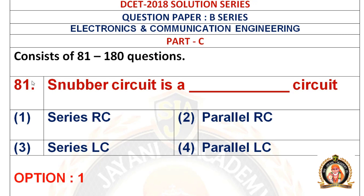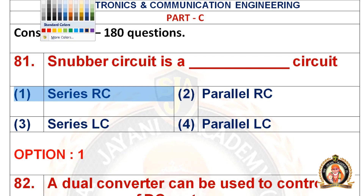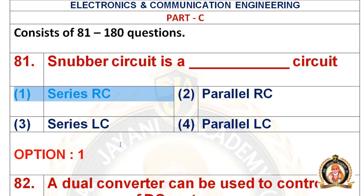The first question is the 81st question: the snubber circuit is a dash circuit. The first option is Series RC, the second is Parallel RC, the third is Series LC, and the fourth is Parallel LC. The right answer for the 81st question is Series RC.